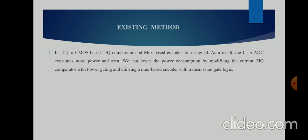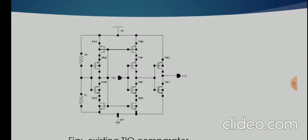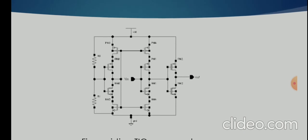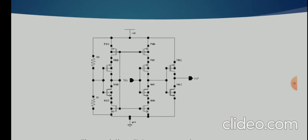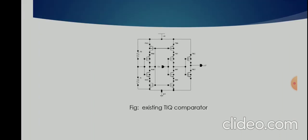For the existing method, this is the TIQ comparator already from the prior art. We can see the CMOS inverter in the TIQ module. There are slave, master, and gain booster CMOS inverter structures. This is the basic TIQ comparator which we have extracted from the base paper.